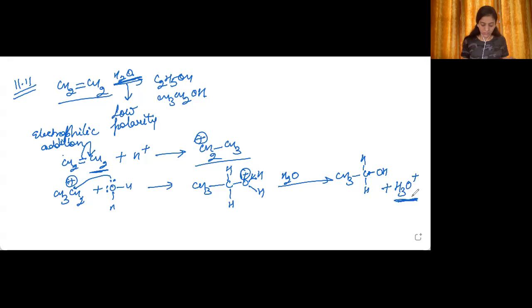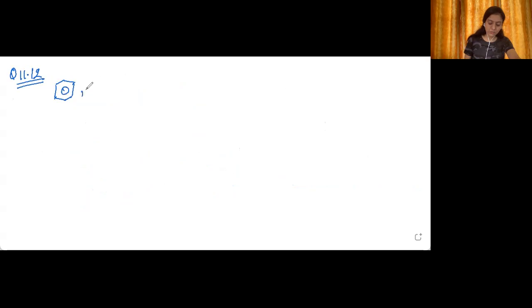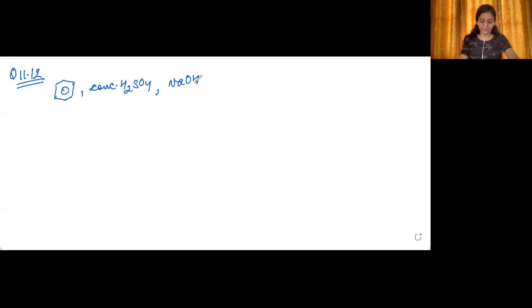This is the mechanism for the formation of ethanol from ethene. Let's now move into question number 12 — question 11.12. You are given benzene, concentrated sulfuric acid, and NaOH. Write the equations for the preparation of phenol using these reagents.